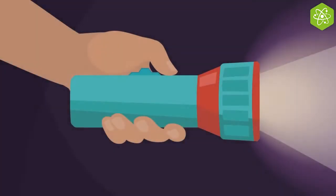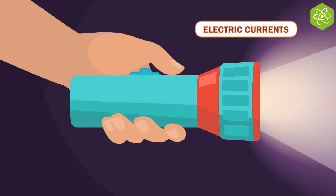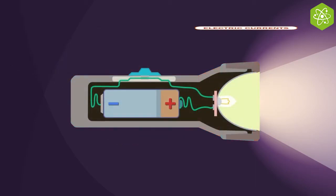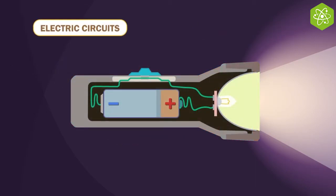To be able to use electrical energy, we need to control the electric discharges and to have them last for some time. This is what we call electric currents. The devices we build to that end are called electric circuits.